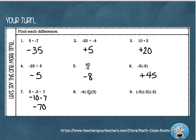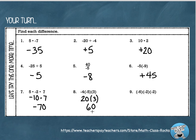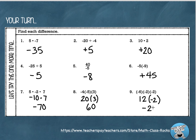For number 8: negative 4 times negative 5 — two negatives give me positive 20. Then I bring down that 3. I've got positive 20 times positive 3 now, and two positives give me positive 60. For number 9: negative 6 times negative 2 is positive 12. Then I bring down this negative 2. Positive 12 times negative 2 — signs are different — so that's negative 24.